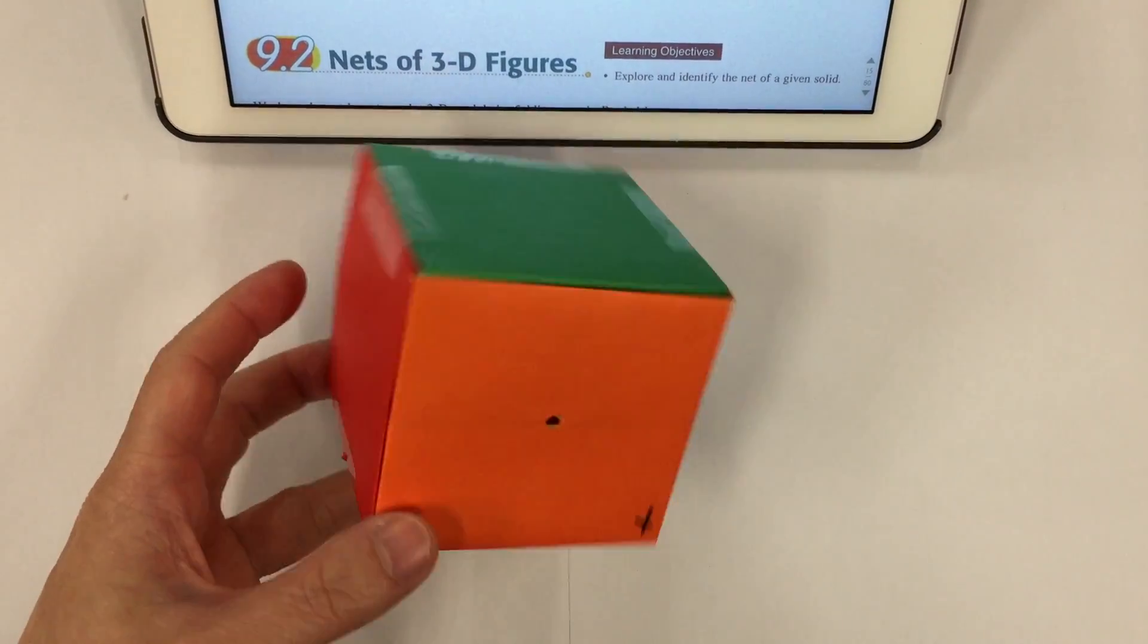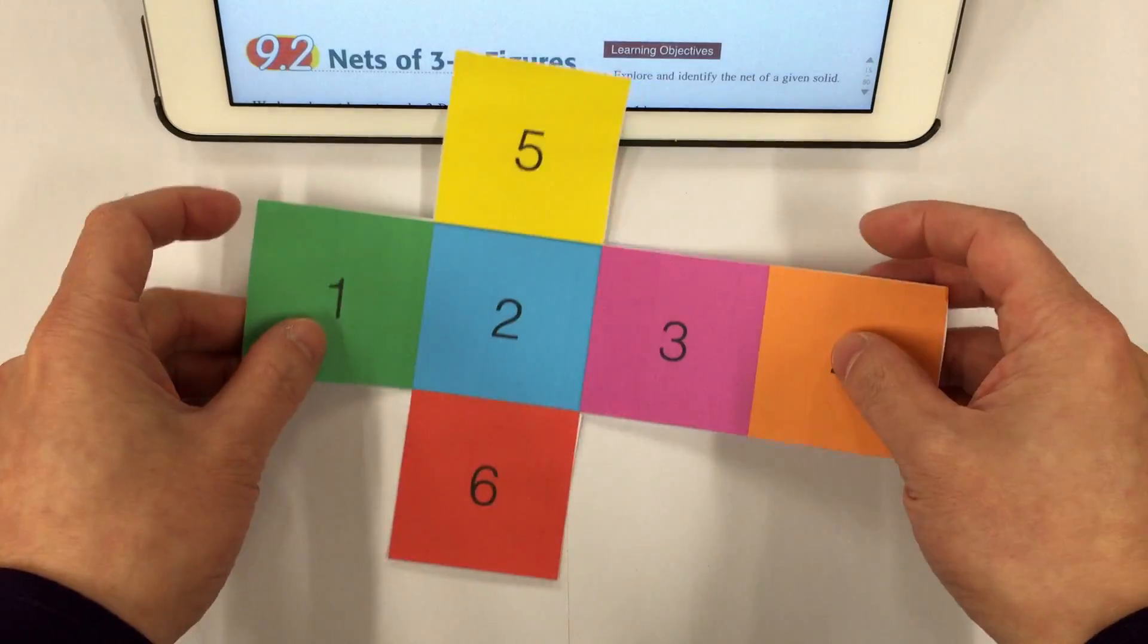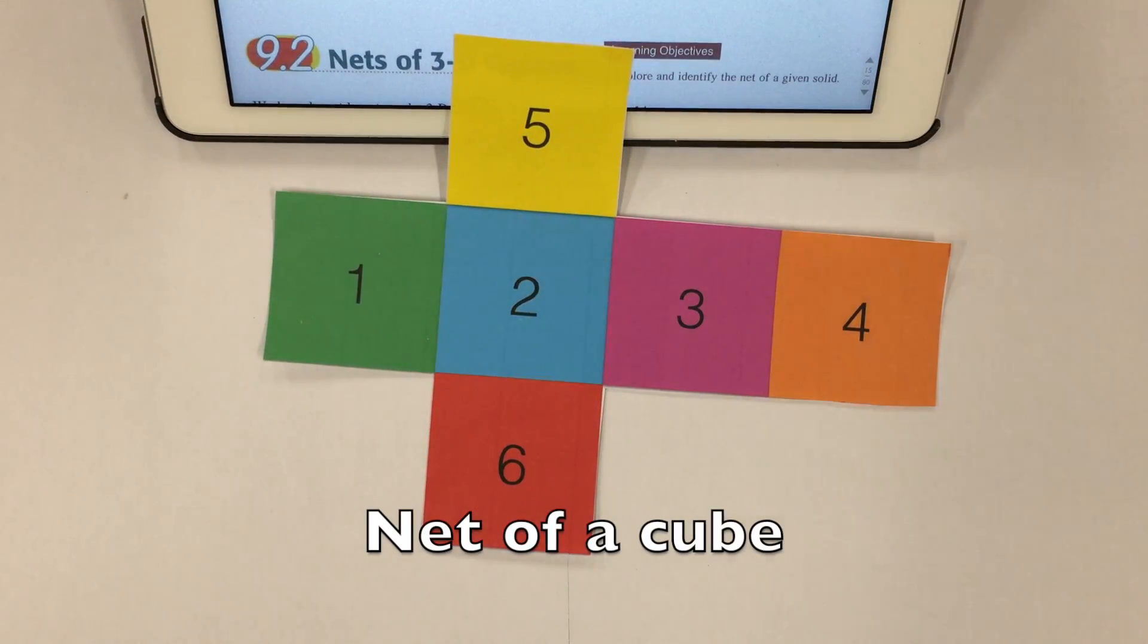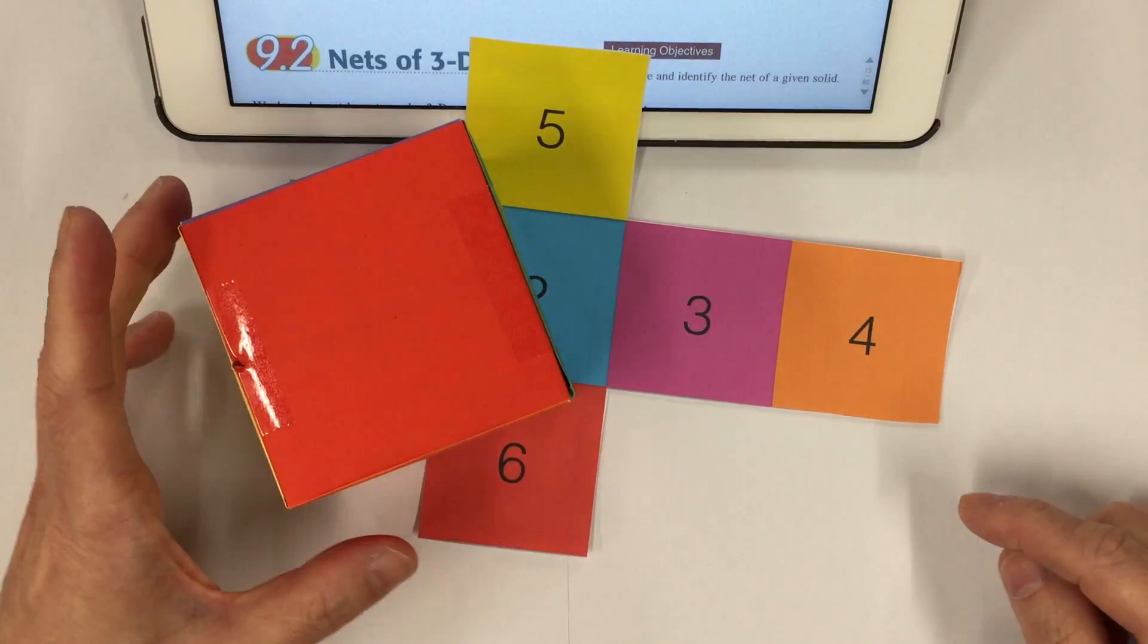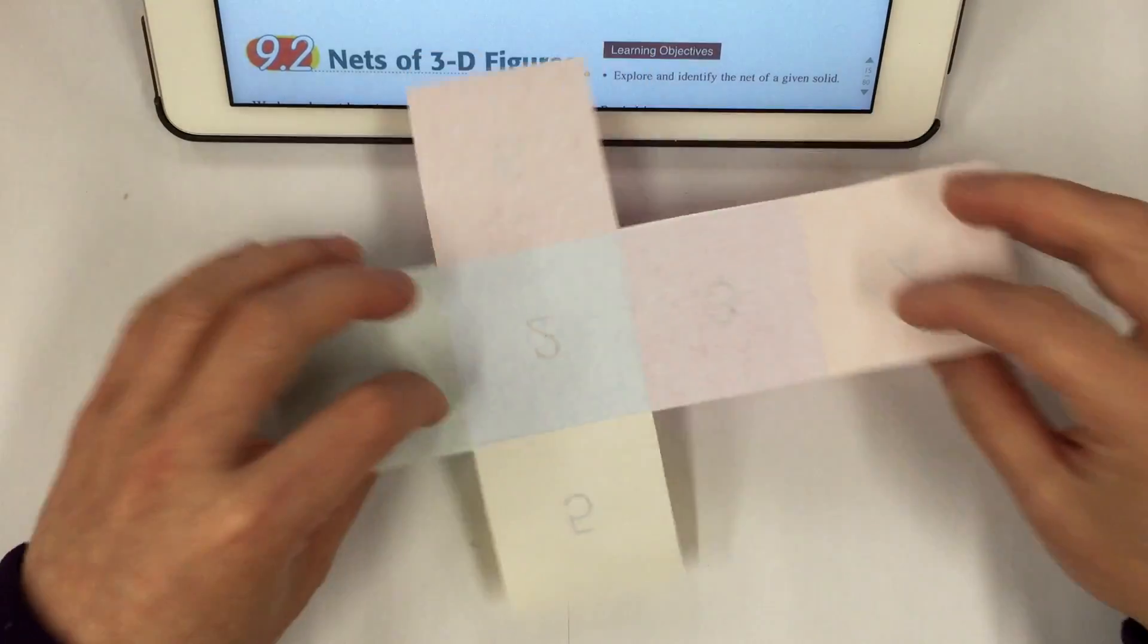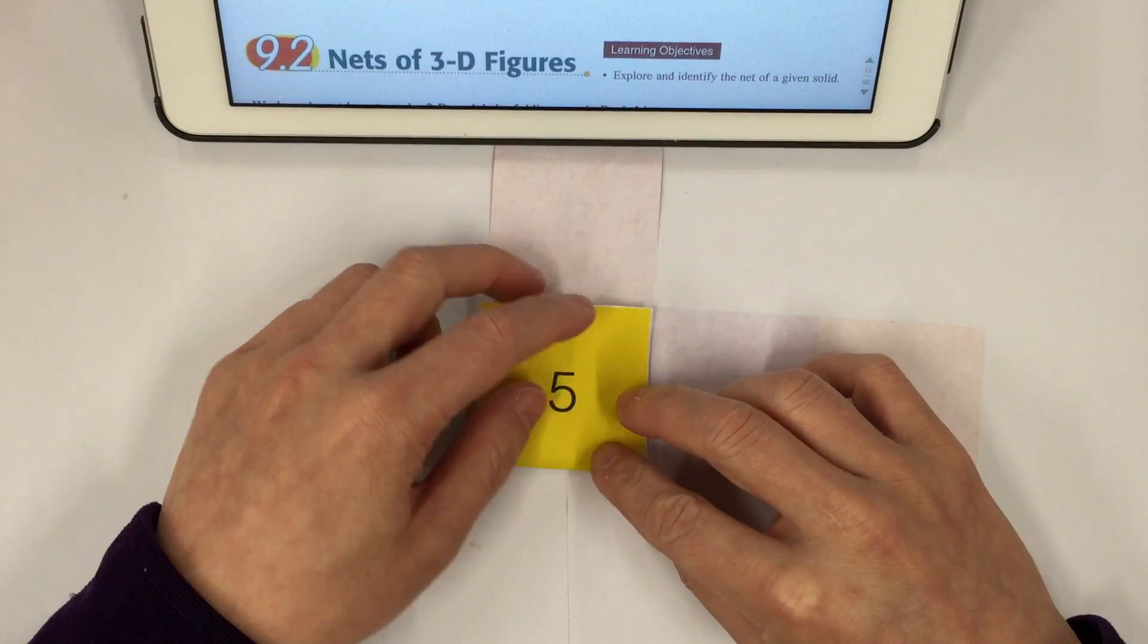Similarly, so this is a cube and this is a three-dimensional object. This is the net of a cube, so this is two-dimensional and this is three-dimensional. And if folded properly, then this will become a cube.